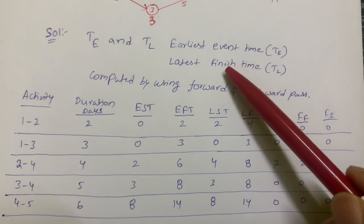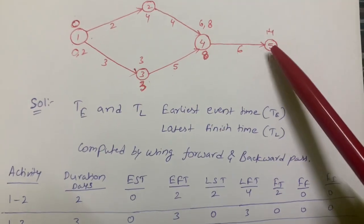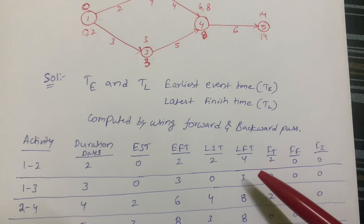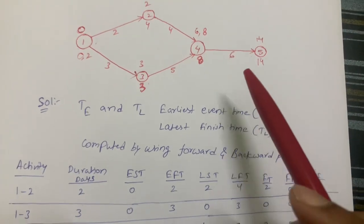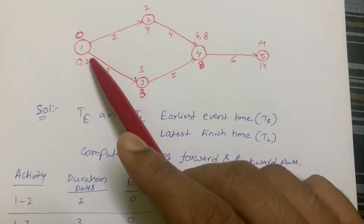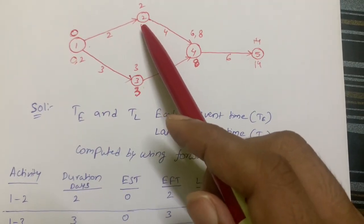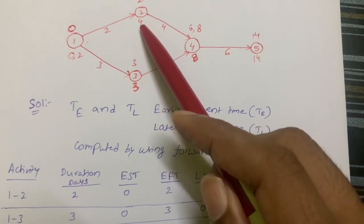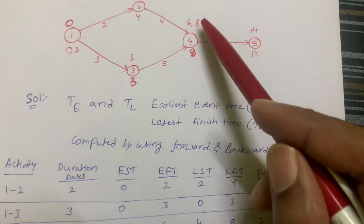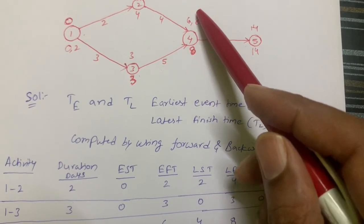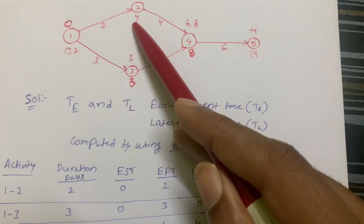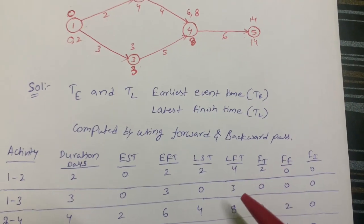Now we calculate LFT (latest finish time) using the backward pass. For activity 1-to-2, at this junction we get two values and we must consider the maximum value. So LFT = 8 − 4 = 4. The latest finish time for activity 1-to-2 is 4.